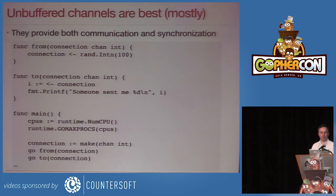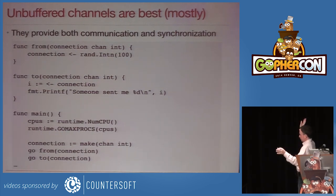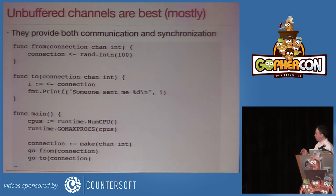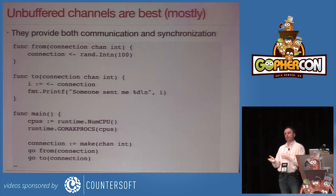For example, in this little example: there's something which thinks of a random number and something that receives that number on a channel — two completely separate processes. You know that those two things agreed on that thing happening at that moment. From a communication perspective, don't get tempted by buffering. How much buffering should I have in this channel? The answer is zero, unless you have a really good reason.